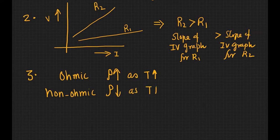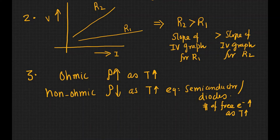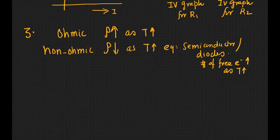You need to remember that typically your resistivity would decrease as your temperature increases. Now for example in a semiconductor or diodes, you have the number of free electrons increase as temperature increases, so they become better conductors or the resistivity decreases.